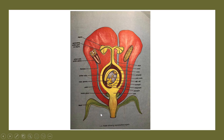Here is the structure of the flower showing the reproductive organs. This is the anther with the pollen grains, and this is the female reproductive part of the flower — the ovary, the ovule, and the style. These all directly take part in sexual reproduction in angiosperms.